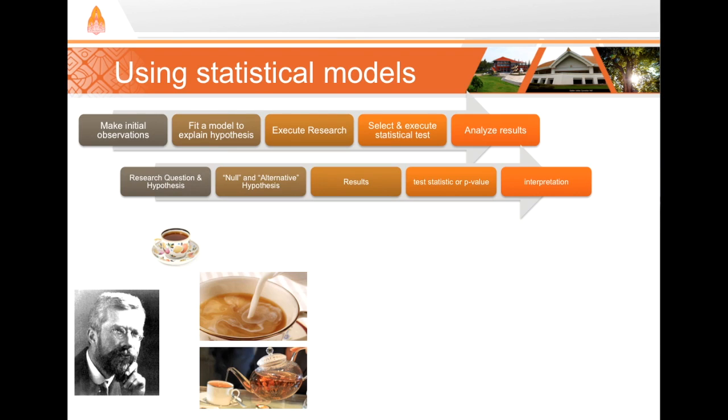Fisher designed and executed a research experiment. To do that, he made eight cups of tea. Into four of the cups, he poured milk first, and into the other four cups, he poured the tea first. He let the woman know that half of the cups had the milk poured in first, and half of them had the tea poured in first, then the milk on top. He then served them to her in a random order. She was supposed to identify which cups she thought had the milk poured in first, and then Fisher compared her guesses to the reality.